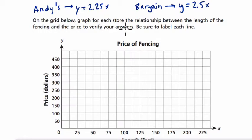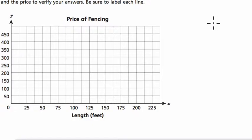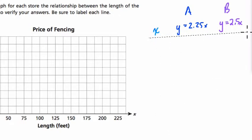And they want on this graph below to show the relationship between the length and the cost. And they want us to label each line. So I'm going to set this up by making a little table right over here. And so on this table, we're going to have three things. We're going to have x, which is the input. And then we'll have a column for Andy's, where y equals 2.25x. I'll put an A up here. And then I'll use purple B for bargain, y equals 2.5x. And then I'm just going to split this table up into regions with my line tool.